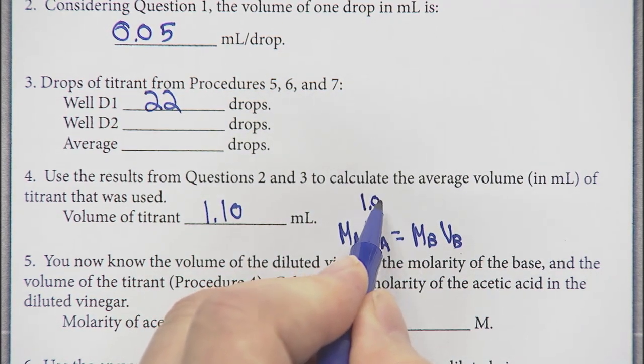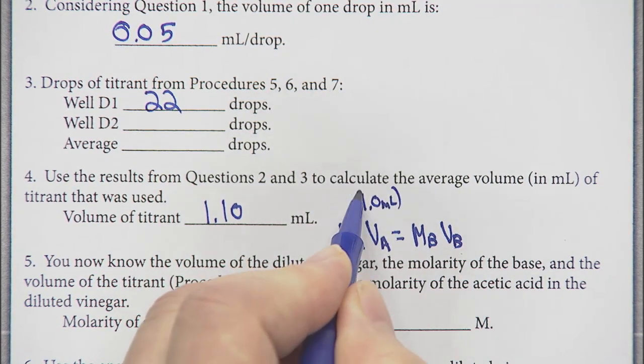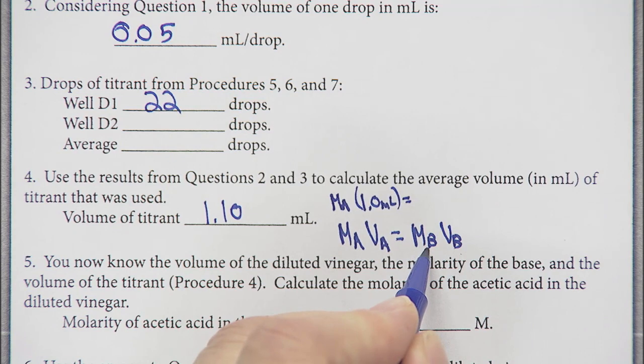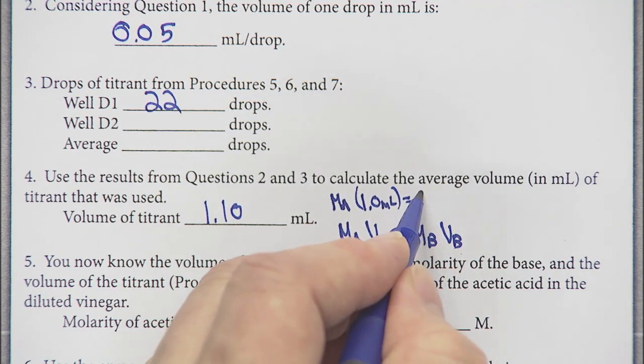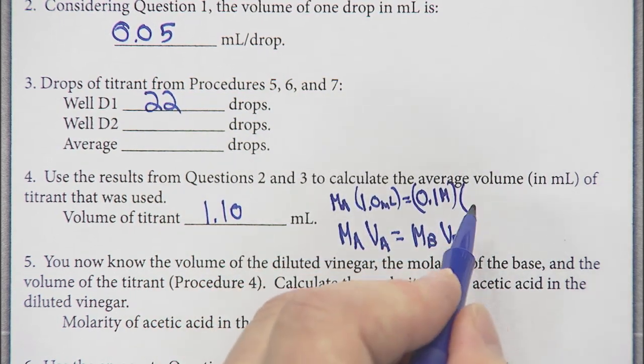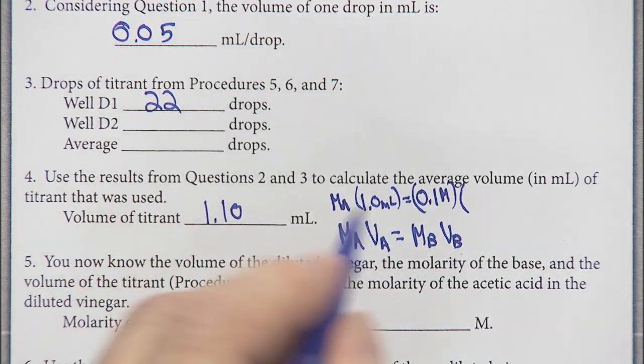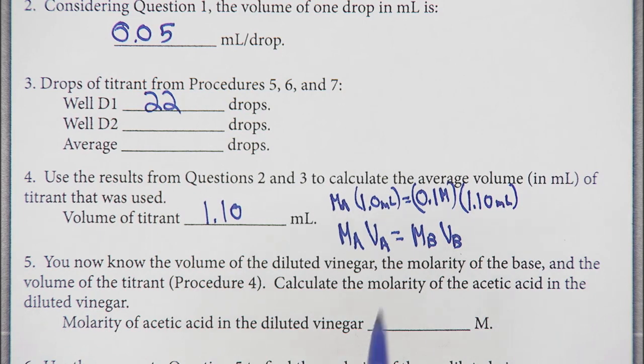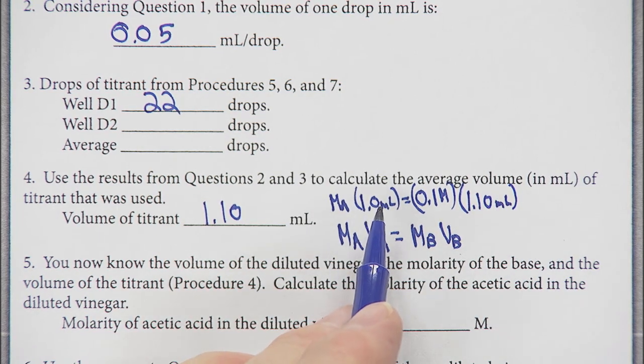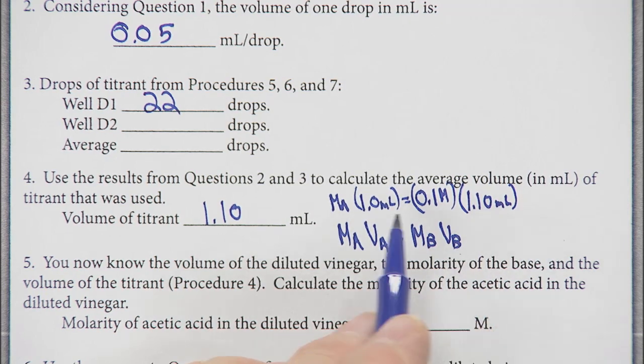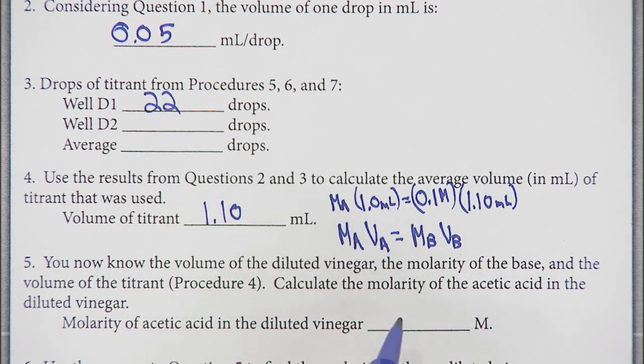The volume of the acid is one milliliter, that's how much we put into the well plate. The molarity of the acid we don't know. The molarity of the base was listed as 0.1 molar on the bottle, and the volume we just calculated is 1.10 milliliters. We got a 1 here, so 1 tenth of 1.1 is 0.11 divided by 1. The diluted acid is 0.11 molar.